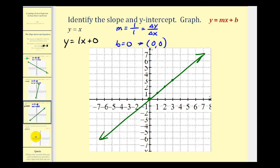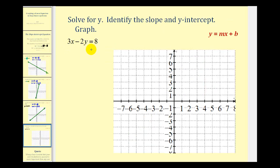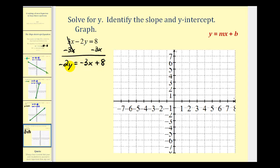Now let's look at one more example. Here we're given the equation three x minus two y equals eight. This linear equation is not in slope-intercept form, so we'll solve for y. First, we subtract three x on both sides, giving us negative two y equals negative three x plus eight. Then we divide everything by negative two, giving us y equals positive three-halves x minus four. Now we can identify the slope is equal to three-halves and the y-intercept is equal to negative four.